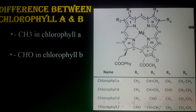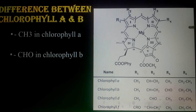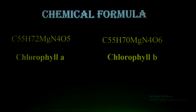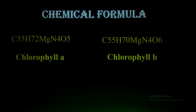The difference between chlorophyll a and b: in chlorophyll a, a methyl group is present at R3, and in chlorophyll b, an aldehyde group is present at R3. Regarding chemical formula differences — chlorophyll a has 55 carbons, 72 hydrogens, 1 magnesium, 4 nitrogens, and 5 oxygens. Chlorophyll b has 55 carbons, 70 hydrogens, 1 magnesium, 4 nitrogens, and 6 oxygens.